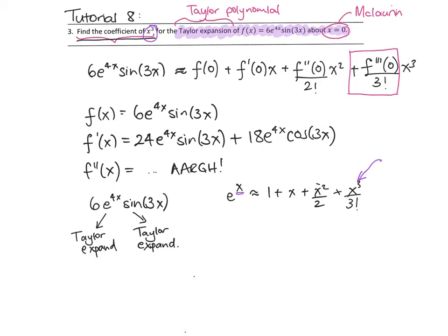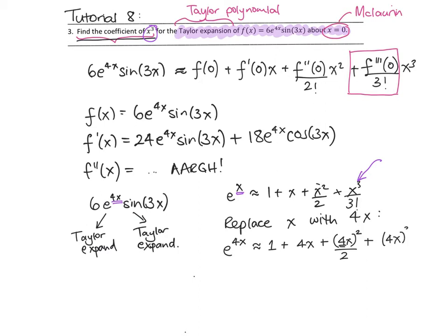Notice that this is e to the x, but what I really want is e to the 4x. The useful thing about Taylor polynomials is I can replace x with 4x to get a Taylor polynomial for e to the 4x. So e to the 4x is approximately equal to 1 plus 4x plus (4x) all squared over 2 — be careful, the 4 is inside the squared — plus (4x) all cubed divided by 3 factorial. I can write that neatly as 1 plus 4x plus 8x squared plus 64 over 3 factorial times x cubed.